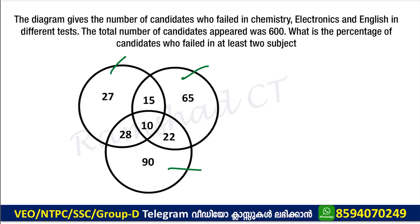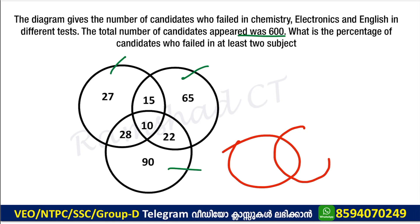We need to find at least the minimum — the percentage who failed in at least two subjects. The total candidates are 600 and we have to get the percentage of those candidates. The two factors are calculated. We have to look at the overlapping regions.